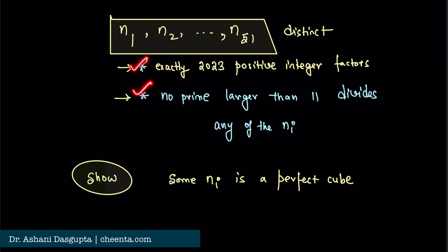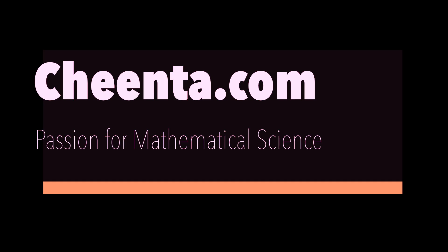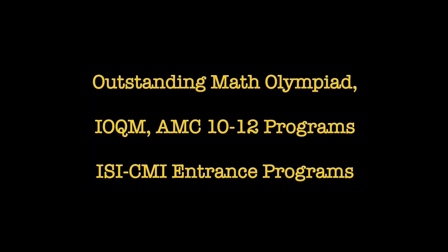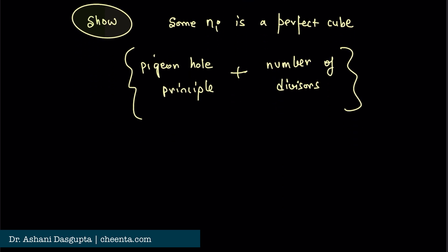The statement is this: there are 51 distinct numbers, N1 up to N51, such that each of them has exactly 2023 positive integer factors. And no prime larger than 11 divides any of them. The allowed prime factors are 2, 3, 5, 7, 11. There are five of them allowed.